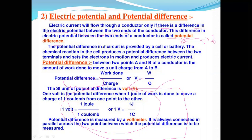The potential difference in a circuit is provided by a cell or battery. The chemical reactions in a cell produce a potential difference between the two terminals, set electrons in motion, and produce electric current.